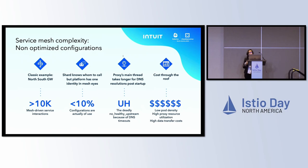Along with that, even our cost was going through the roof because IstioD was doing a lot of cross-AZ data transfer to push these Istio configurations to all the Istio proxies. The Istio proxy was holding that many configurations, so memory utilization was also high. And the DNS was also processing so many requests, so cost was going high for DNS utilization as well.